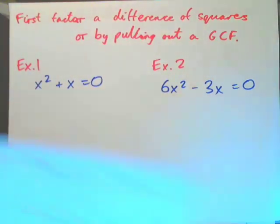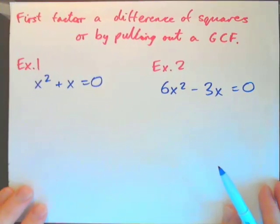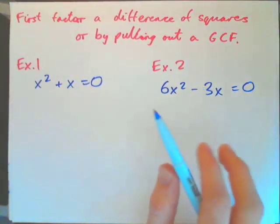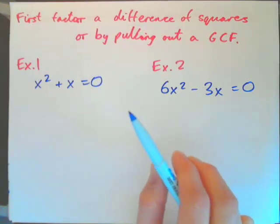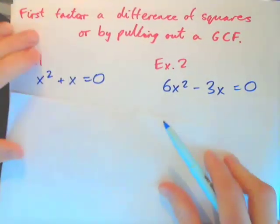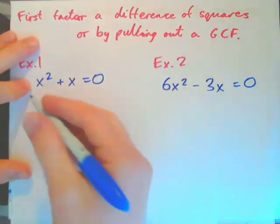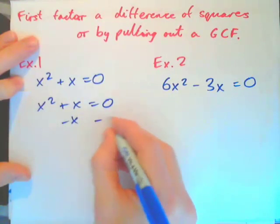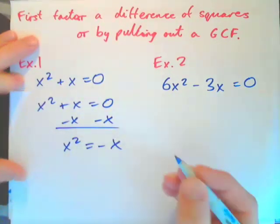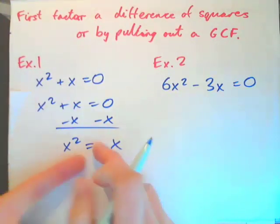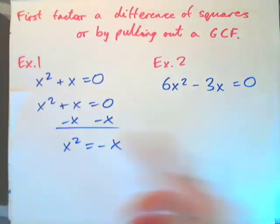Let's start with example 1. We have x squared plus x equals 0. If you tried to solve that using linear methods — for example, subtracting x from both sides — you get x squared equals negative x. We cannot isolate x with linear methods by adding and subtracting to both sides. So we're stuck.